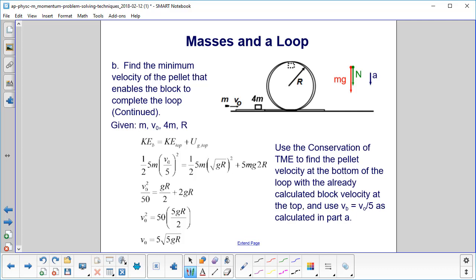Now we can use the conservation of total mechanical energy to find the pellet velocity at the bottom of the loop. So we're going to use this right here. And notice, this time we do have a kinetic energy at the top. And we just found that in the previous slide.